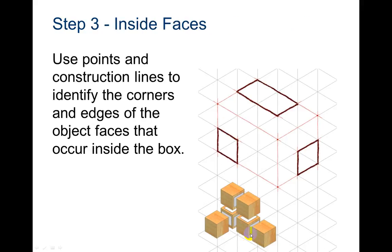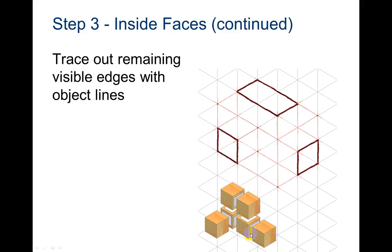Now use points and construction lines to identify the corners and edges of the object faces that occur inside the box. And if you're using isometric paper and following along, just pause as I hit the enter button to show the new lines. Just pause in between as you're trying this. So trace out remaining visible edges with the object lines.